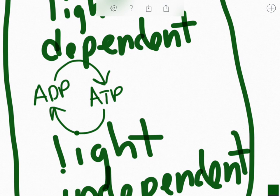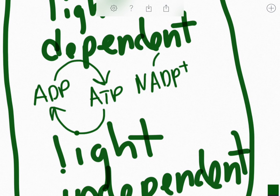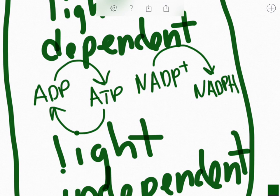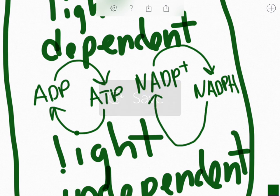We're also going to have the same thing happen with NADPH. NADP+ is going to travel to the light-dependent reactions, where it's going to get built up into NADPH, which is then going to travel to the light-independent reactions, unload its energy, and then be recycled back.